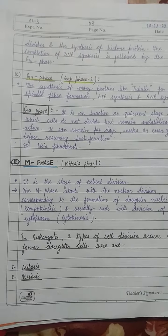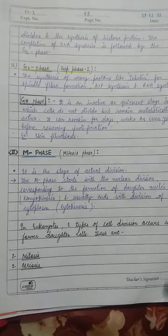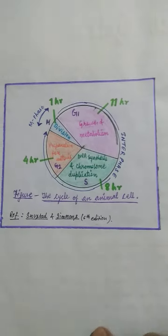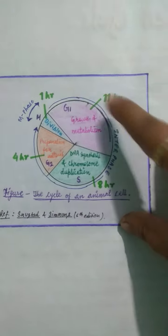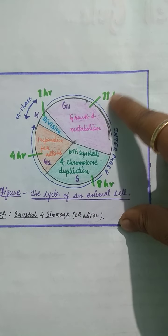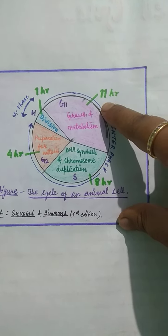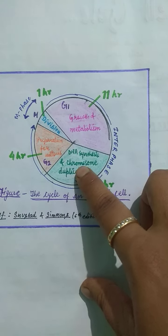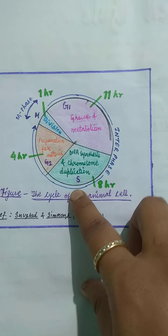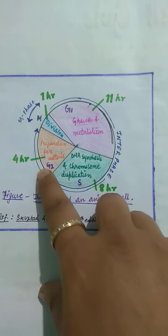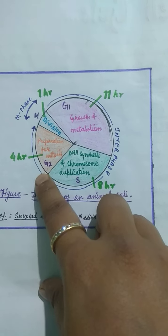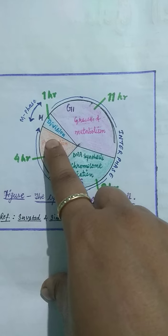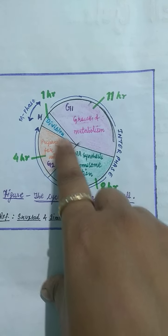For example, skin fibroblasts enter G0. Looking at the diagram, the phases of the cell cycle are: G1 phase is the biggest phase at 11 hours; S phase involves DNA synthesis and chromosome duplication at 8 hours; G2 phase is preparation for mitosis at 4 hours; and the smallest phase is M phase, the mitotic division phase.